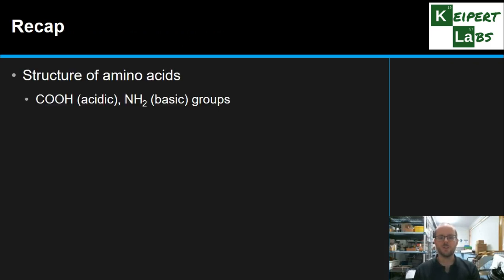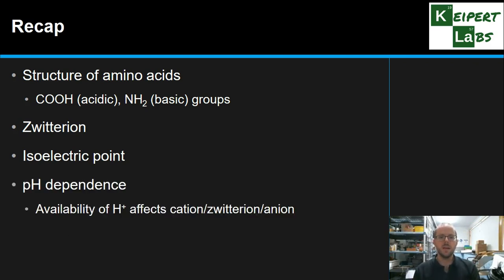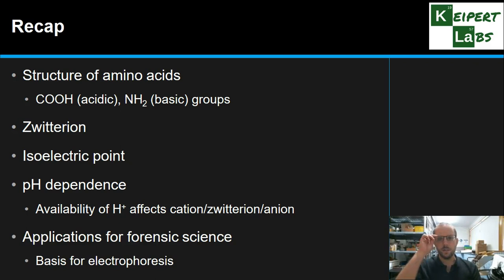So we revisited the structure of amino acids where they have both acidic and basic groups. Because we have an acidic and basic group joined together, we have this ability for the proton to move from one side to the other to form a zwitterion, the dipolar ion. It's got a positive and negative side at the same time. Each amino acid has this point called the isoelectric point where the zwitterion is what we would find. And the version of the amino acid that we find in solution is dependent on pH, dependent on the availability or number of protons around as to whether it's the cationic version, the zwitterion, or the anionic version. And the fundamental principle of how this works gives it application for forensic science or separation science in the technique of electrophoresis.